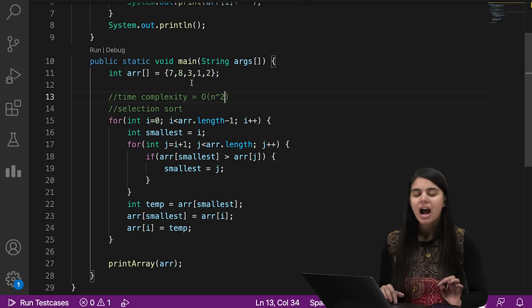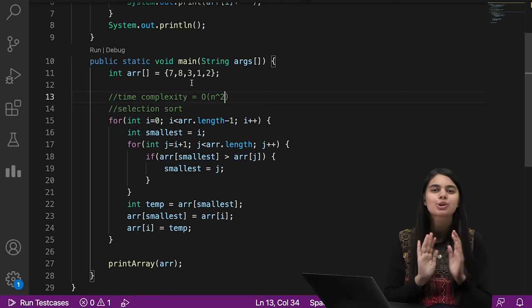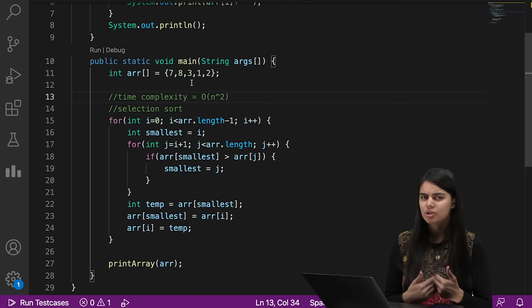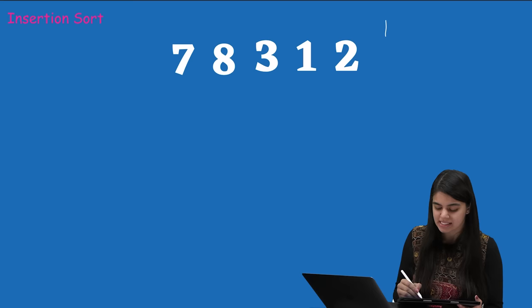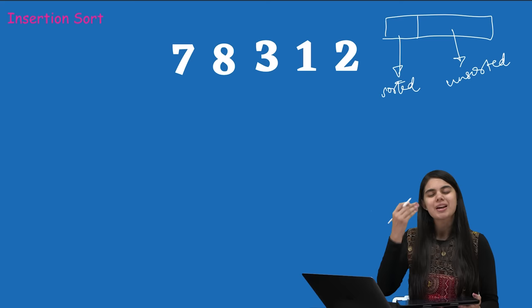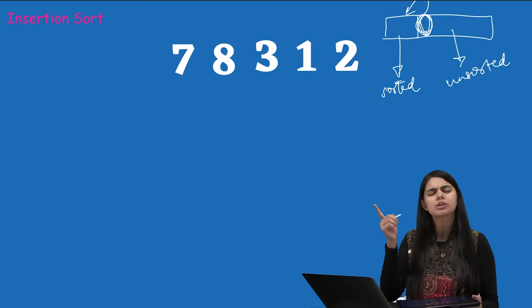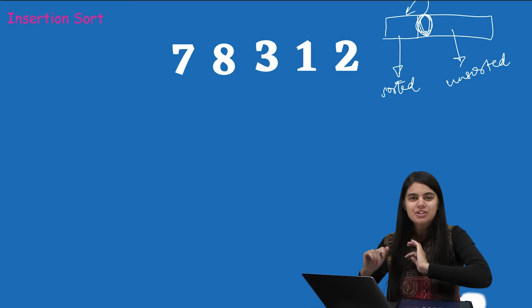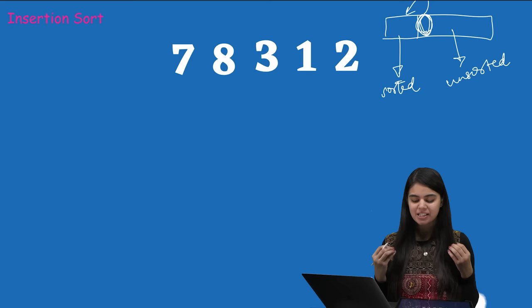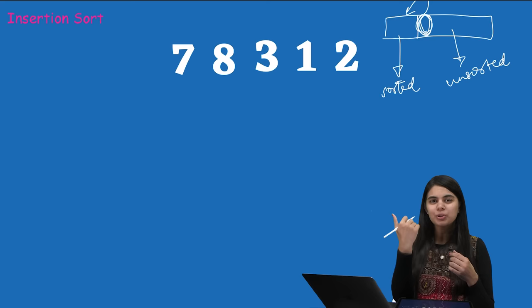The third and final basic sorting technique is insertion sort. This feels the most confusing to students, but once there is a small understanding, things become quite easy. Basically in insertion sort we divide the array into two parts: a sorted part and an unsorted part. We pick one element from the unsorted part and place it correctly into the sorted part. As the unsorted part shrinks and the sorted part grows, the whole array becomes sorted.